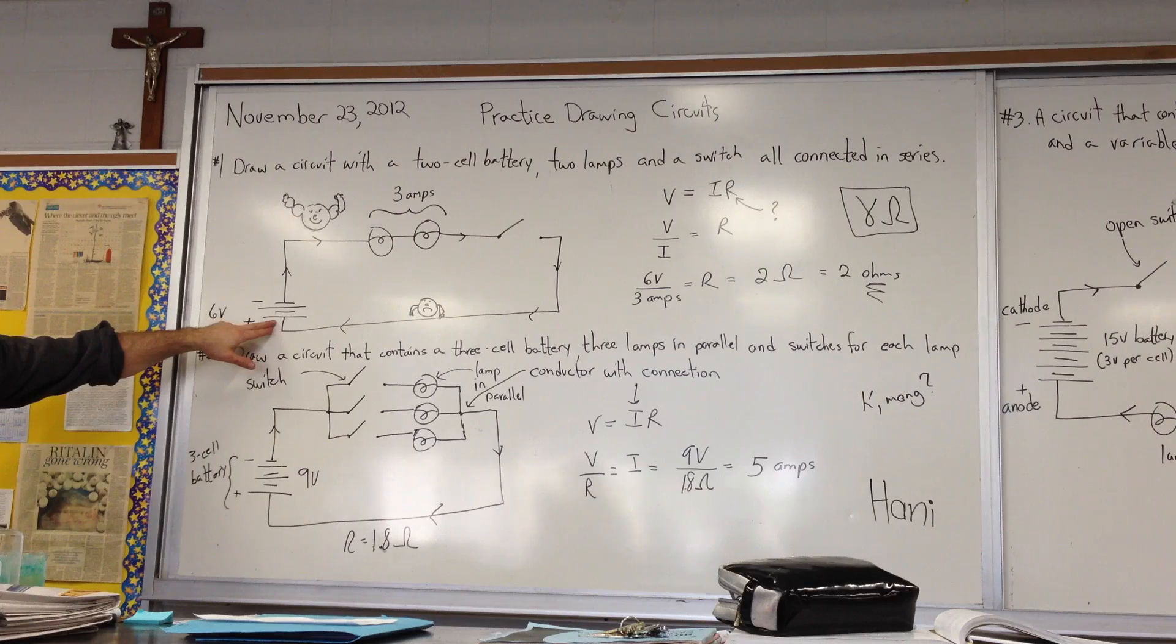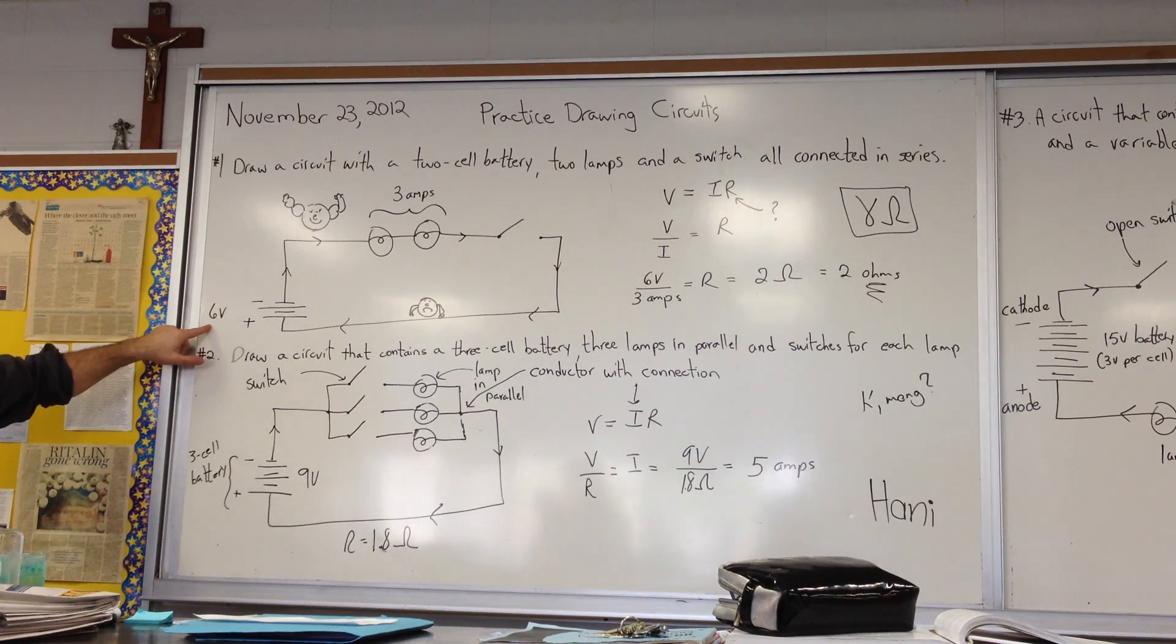And if each one of the cells has three volts in it, then the whole battery, because it has two cells, will have a total of six volts.